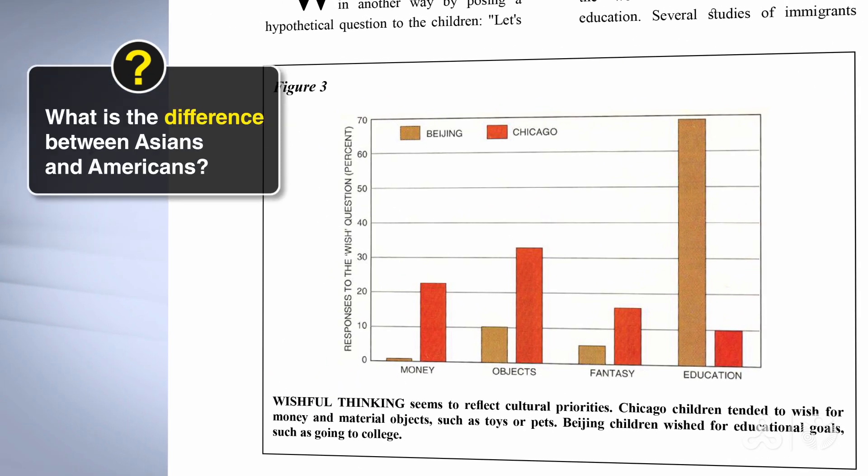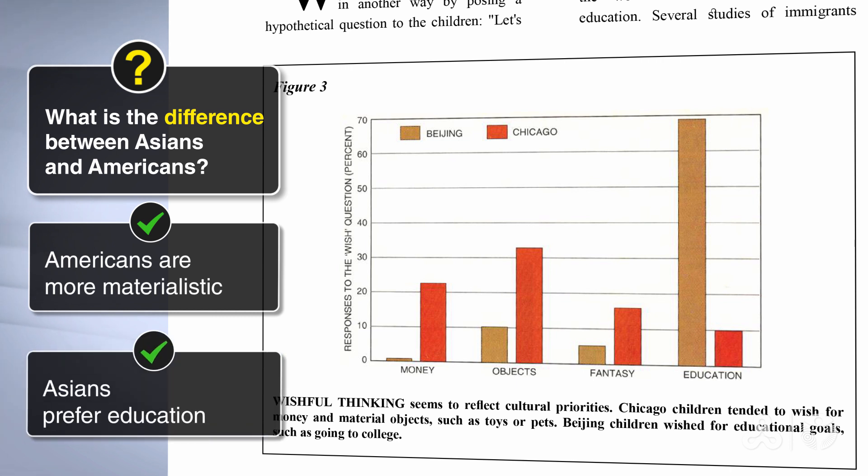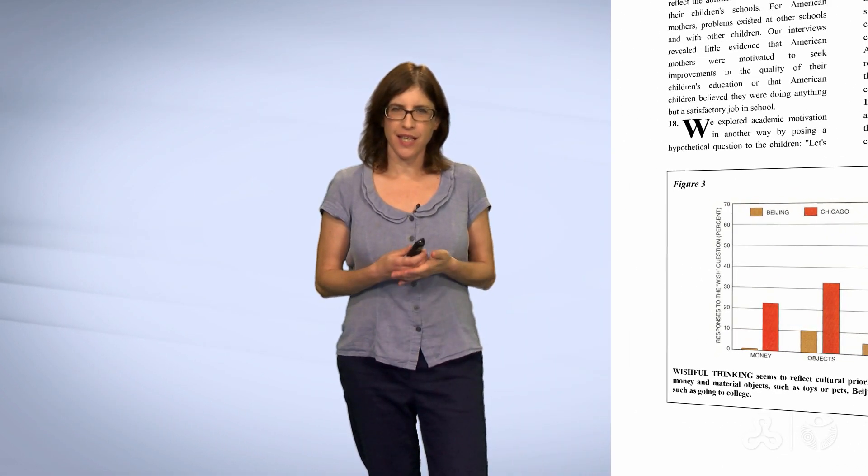So, what is the difference between Asians and Americans according to Figure 3? Well, what we see is Americans are more materialistic or Asians prefer education. See how high the graph of education for Beijing children. This is very interesting because we can start understanding a few things. If children are satisfied with their work and if their education is not top priority, then why work hard?